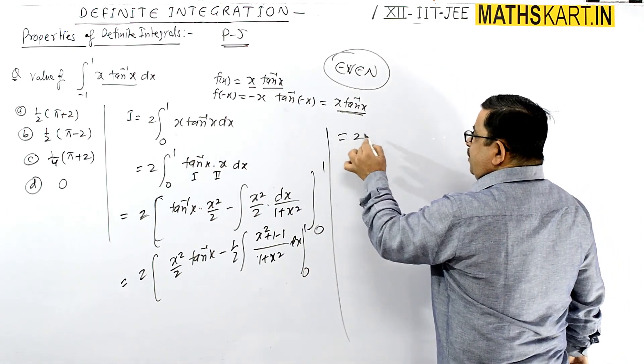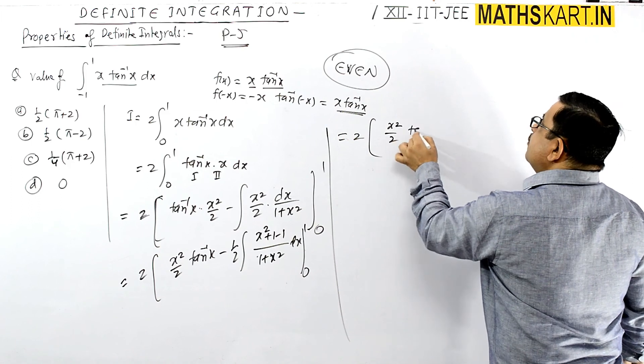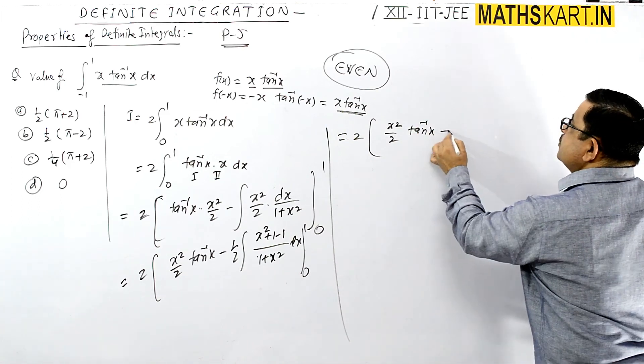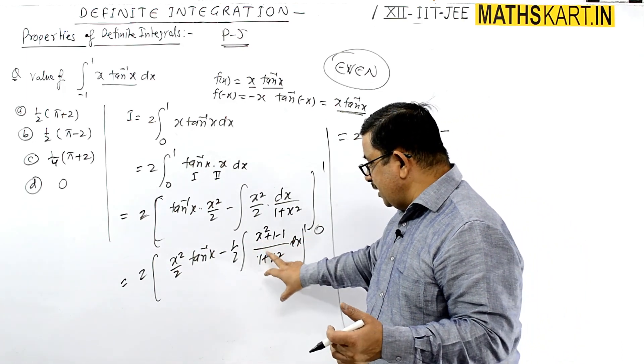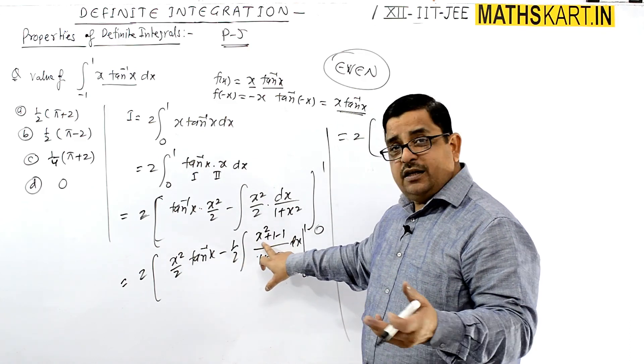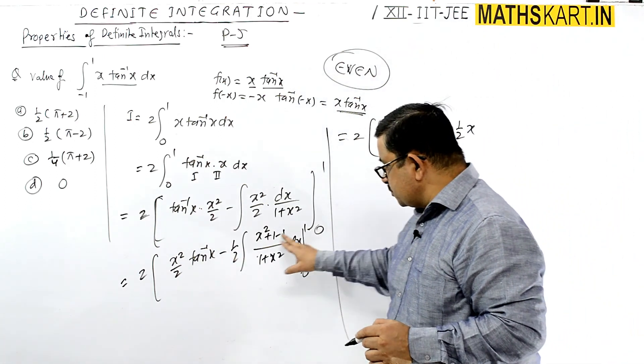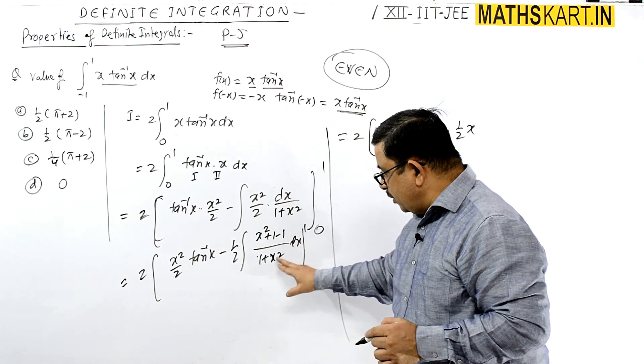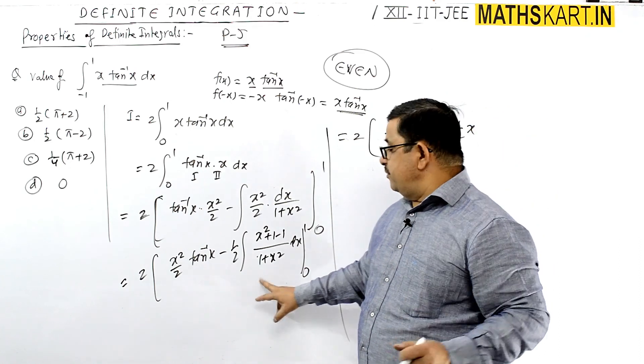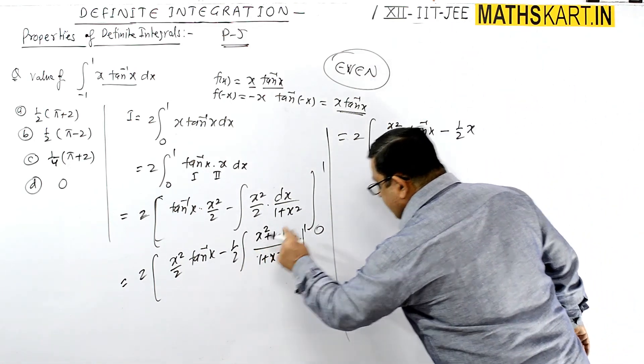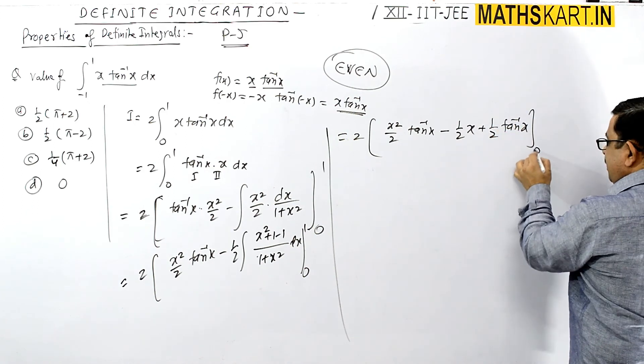This is 2 times: x²/2 tan inverse x minus - when we separate it, it gives 1, whose integration is x. So minus x minus 1/2 of x, which can be written as -1/2 x. Minus minus plus here, and 1/2 times the integration of dx/(1+x²), which is tan inverse x. Minus minus is positive, so +1/2 tan inverse x. Limit placement is pending.